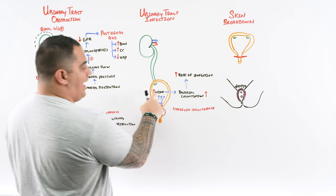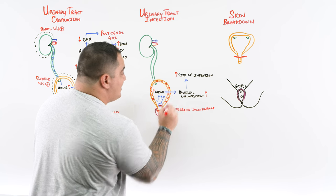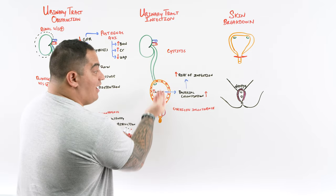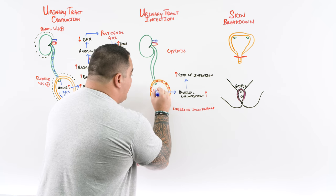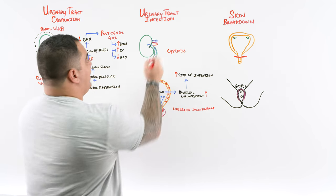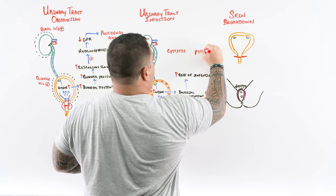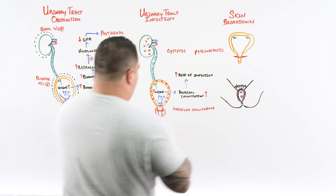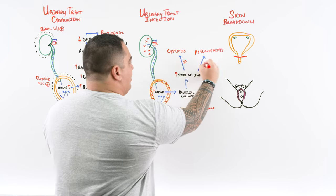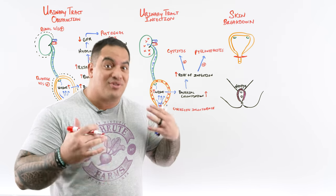Infection can occur in two ways: bacteria can stay in the bladder causing irritation and inflammation — cystitis — or if there's retrograde flow, infected urine containing bacteria can back up through the ureter to the kidney, causing pyelonephritis. Both typically present with urinary symptoms: urgency, frequency, and dysuria.